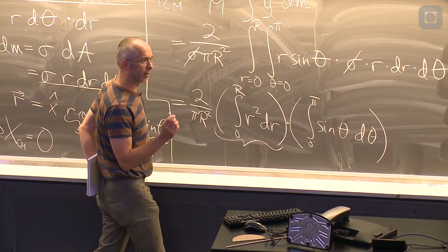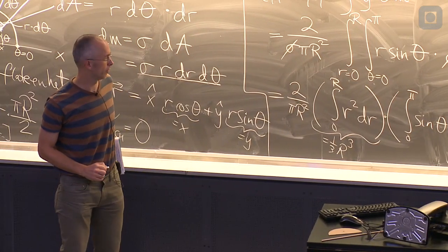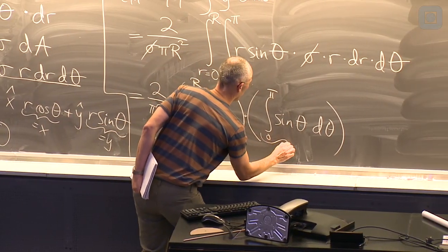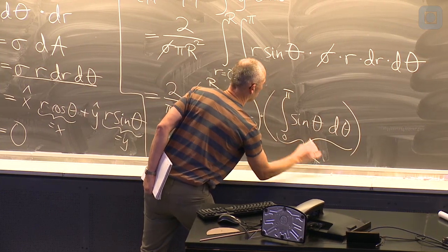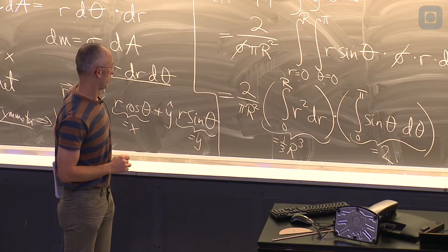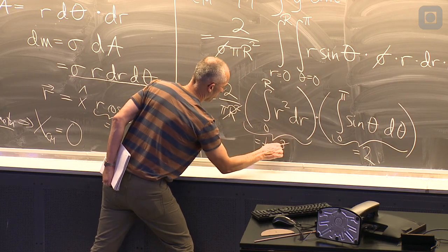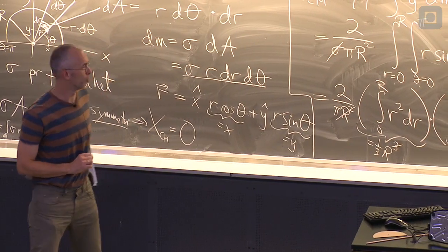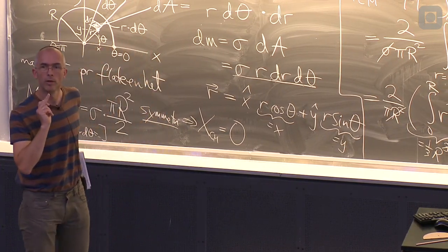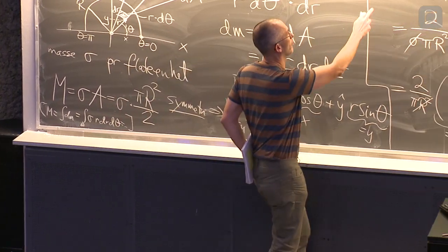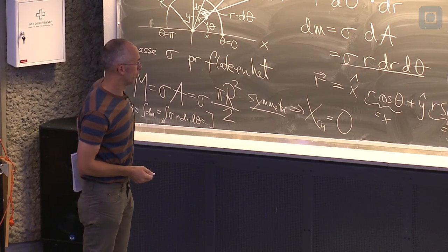Integralet r i a'en, det er en tredjedel r i tredje. Så det var ikke så ille. Integralet sinus, ja det har vi gjort allerede, det er minus cosinus, blir pluss en og pluss en til sammen to. Da forsvant det to r'er mot to r'er der, da vi står igjen med en. Det er veldig bra, at vi står igjen med en, fordi at vi skal regne ut noe som har dimensjon lengde. Hadde vi endt opp med r i a'en til slutt her, så måtte vi ha gått tilbake og gjort det på nytt.